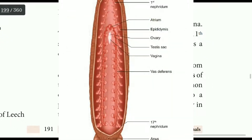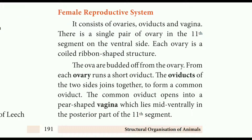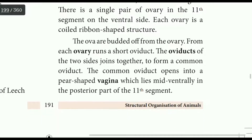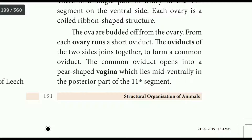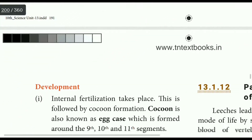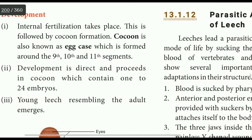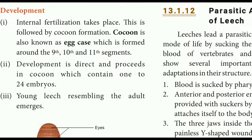Female reproductive system: the ovaries are at the 11th segment on the ventral side, coiled as ribbons. Oviducts and a vagina are present. Because male and female parts are in one animal, fertilization is internal. The cocoon (egg case) is formed at segments 9, 10, 11 and contains 1 to 24 embryos, which develop into adult leeches.